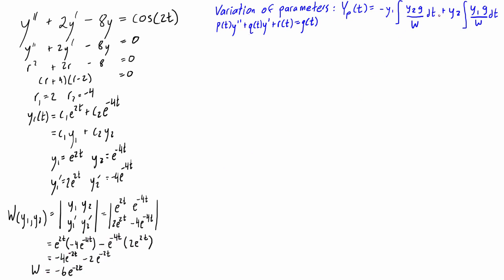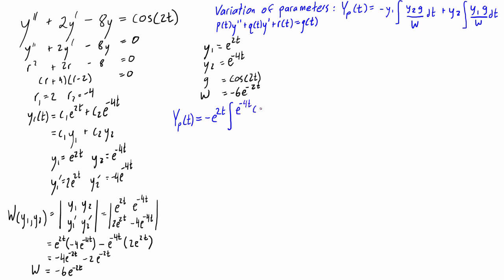Now we have all of the inputs we need for the expression. Just to make sure we have them all in order: y₁ = e^(2t), y₂ = e^(−4t), g(t) is the right-hand side of the original differential equation which is cos(2t), and W = −6e^(−2t). Let's plug all of this into our expression for the particular solution.